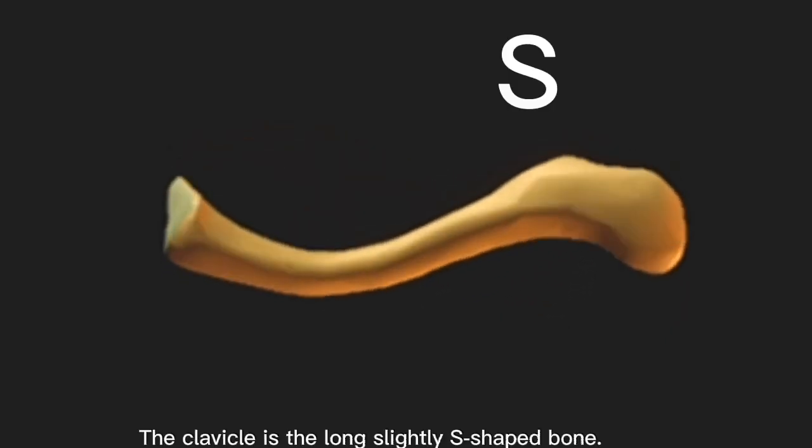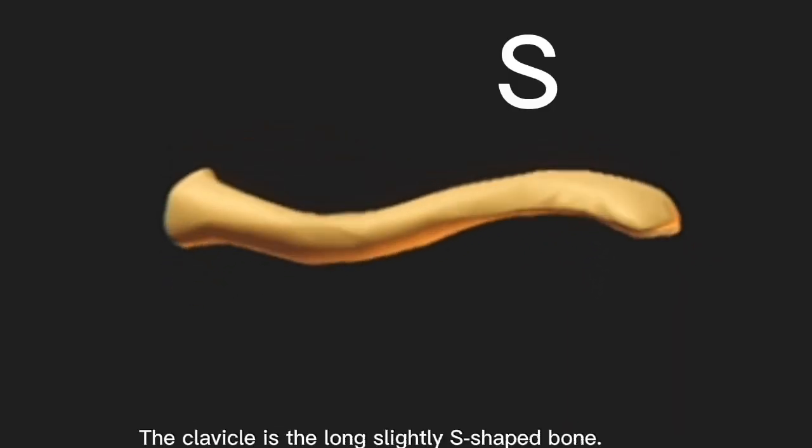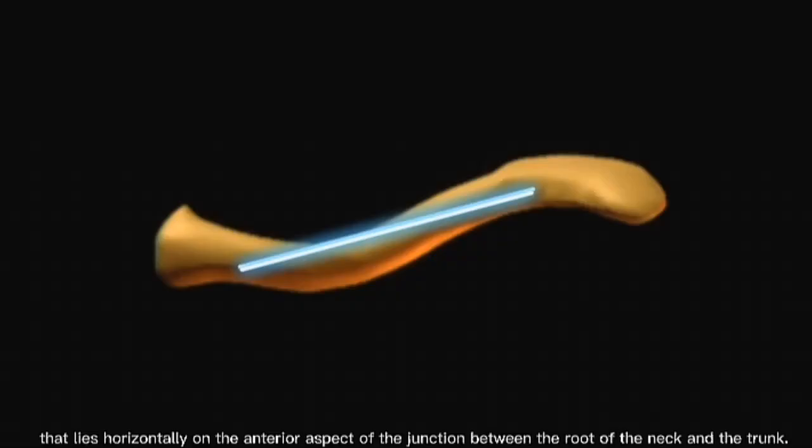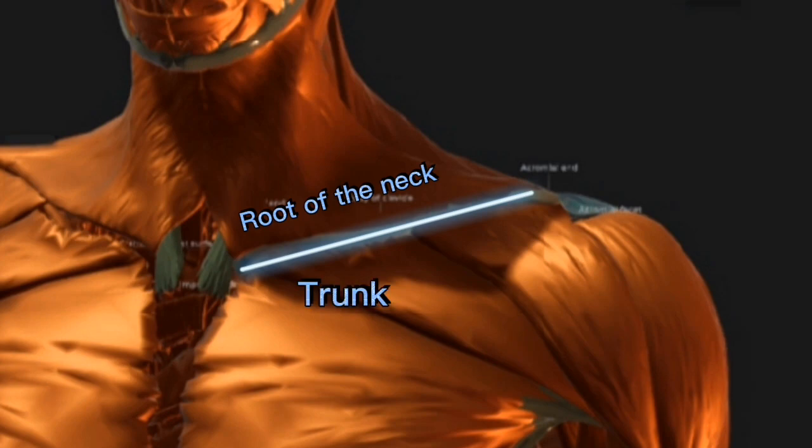Introduction: The clavicle is the long, slightly S-shaped bone that lies horizontally on the anterior aspect of the junction between the root of the neck and the trunk.